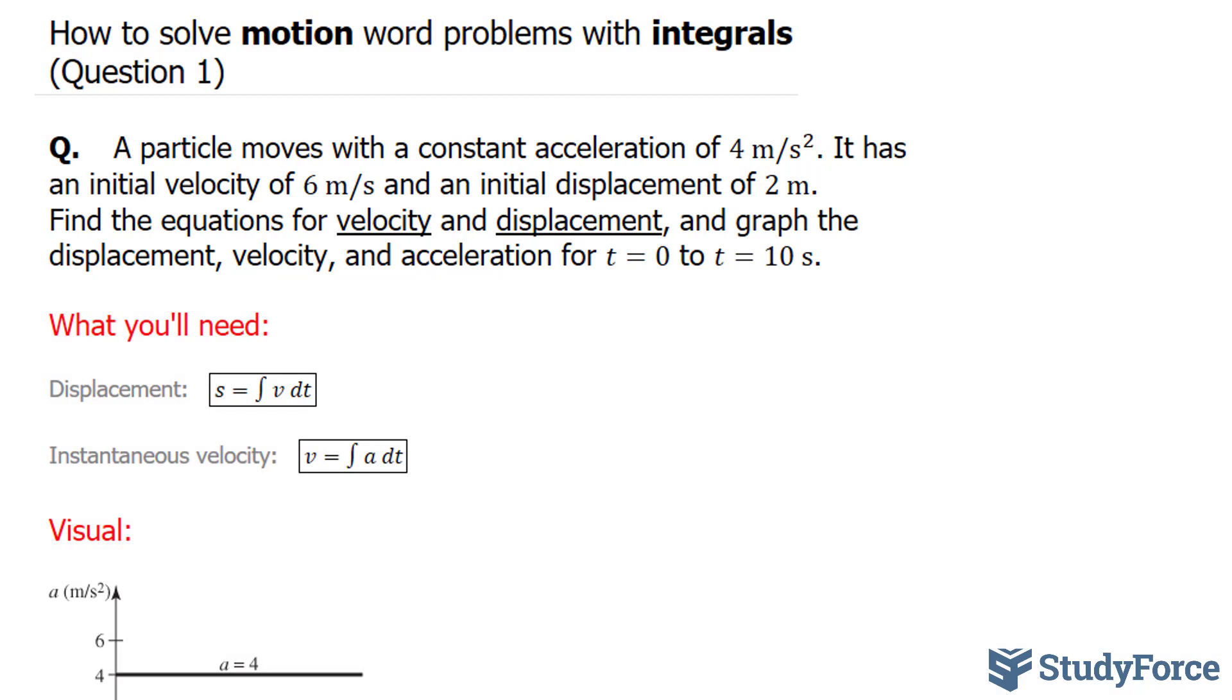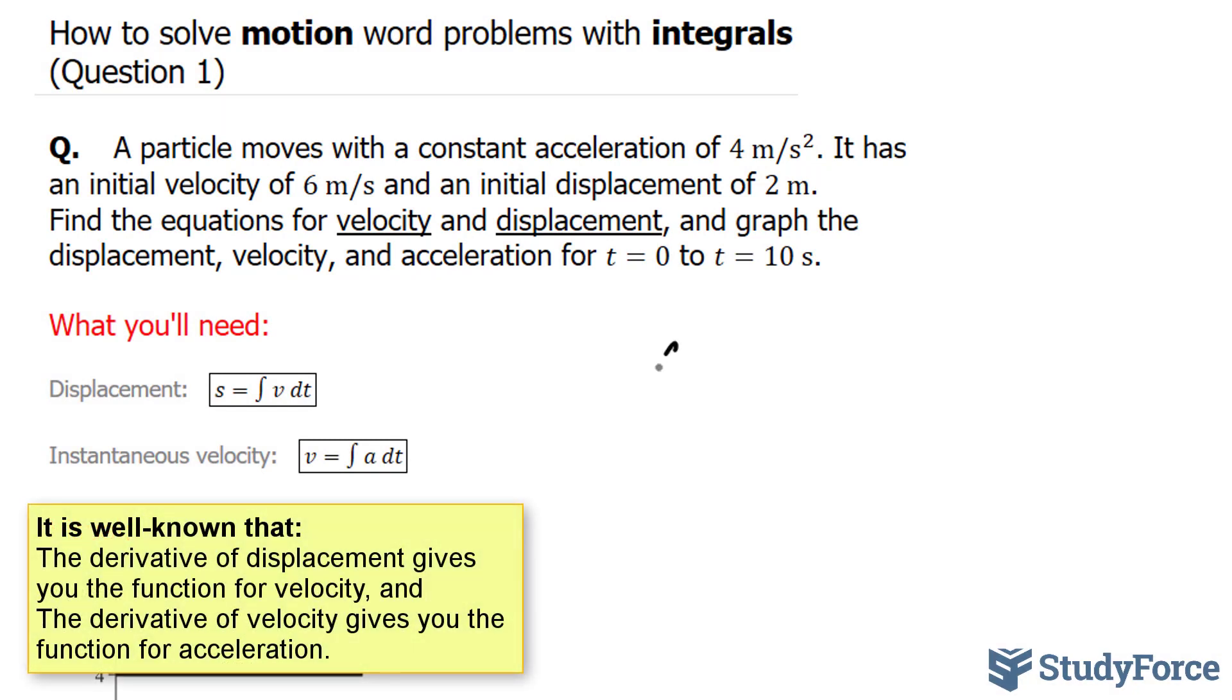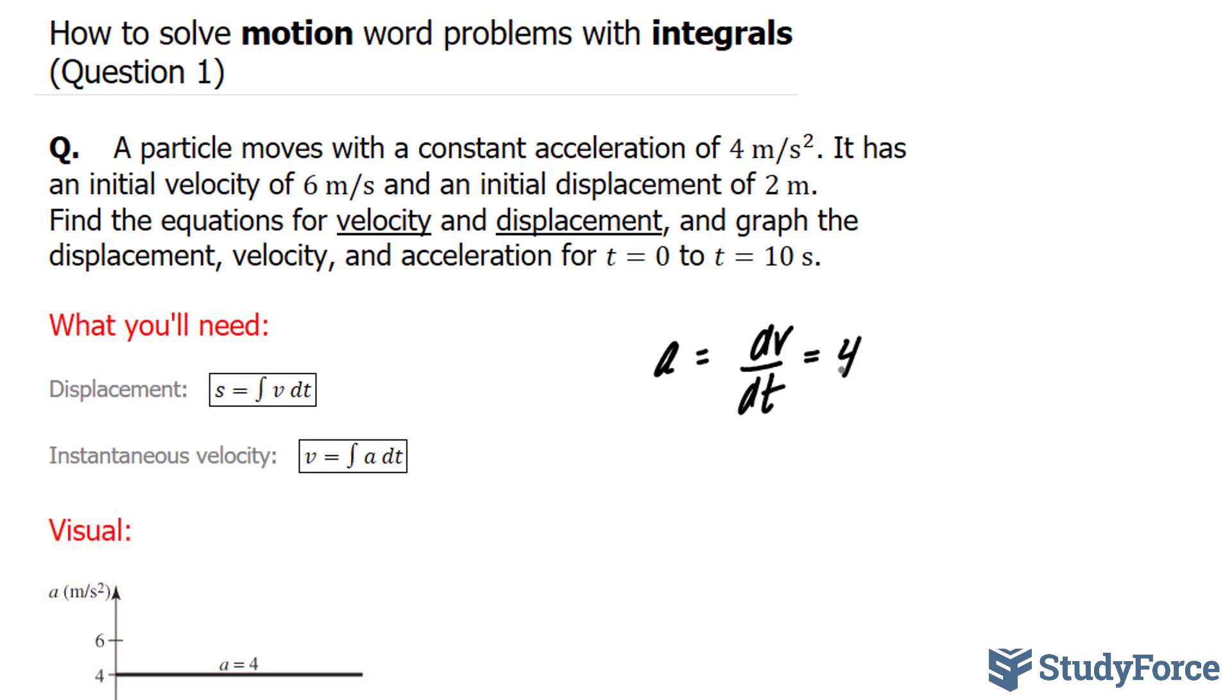We are given the acceleration, which is defined as the rate of change of velocity with respect to time, dv over dt, and that is equal to 4. I'm going to start by taking the integral of 4, so the integral of 4 dt is equal to the velocity.